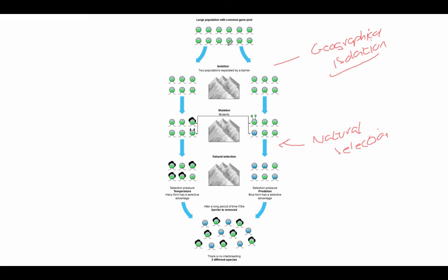Remember this is the key: you start off with the same group of animals. They start off the same but they get split up — that's called geographical isolation. One group goes one way, one group goes the other way. Evolution and natural selection occur on either side. And eventually, if they were ever to meet up again, they've become a new species. That's called speciation — speciation is simply when a group becomes a different species.